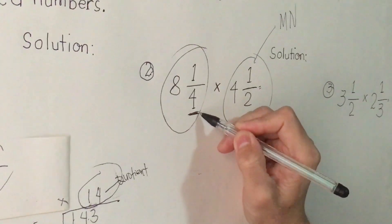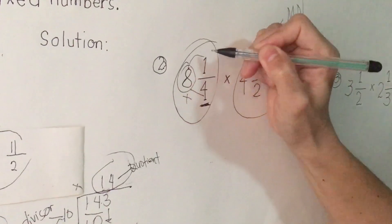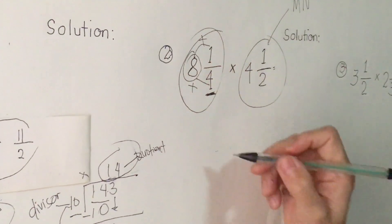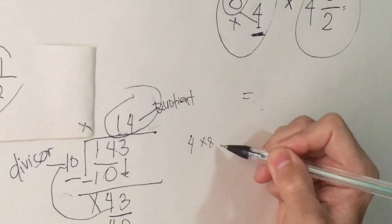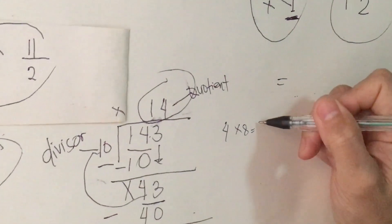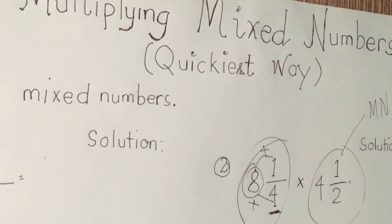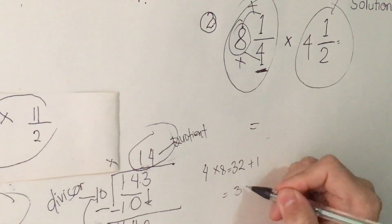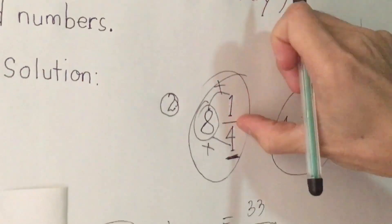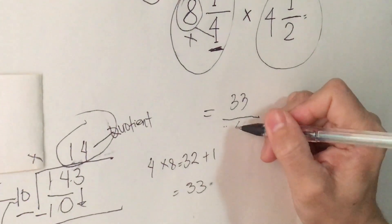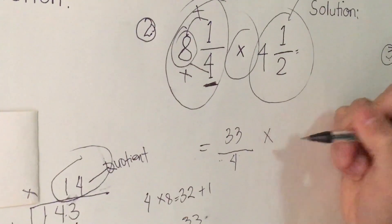Mixed number, we are going to convert mixed number to improper fraction. So simply, we multiply the first denominator 4 to whole number 8. Multiply, then plus to our numerator. 4 times 8, so I'm going to write here 4 times 8, so the right is 32. Plus 1, the numerator. So 33. So I'm going to write here 33, then we have to copy the denominator of the first fraction. And then don't forget to write the multiplication symbol to avoid confusing.